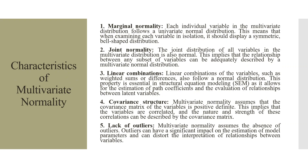Characteristics of Multivariate Normality. First: Marginal Normality. Each individual variable in the multivariate normal distribution follows a univariate normal distribution. This means that when examining each variable in isolation, it should display a symmetric bell-shaped distribution.